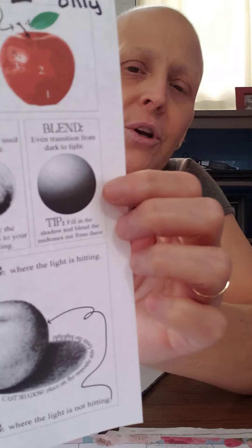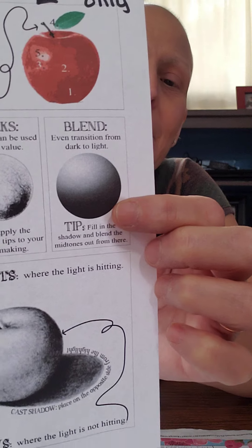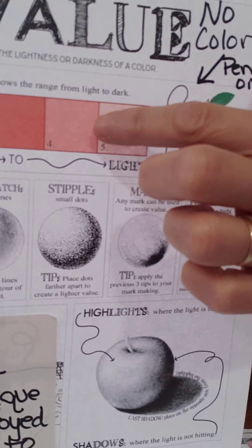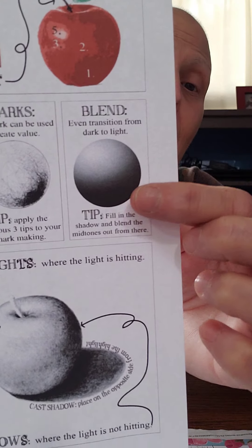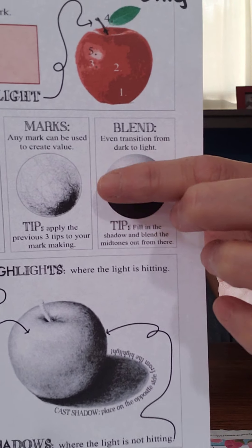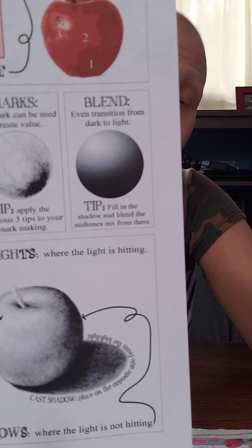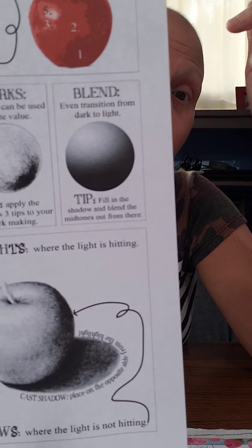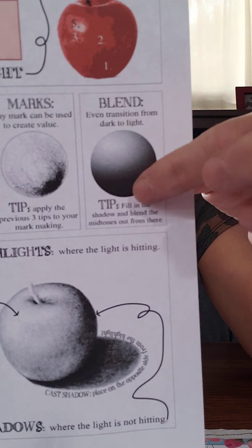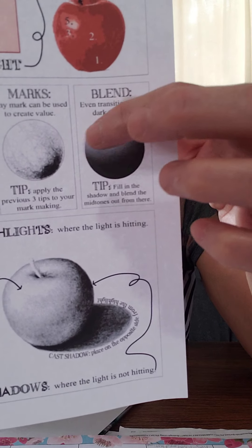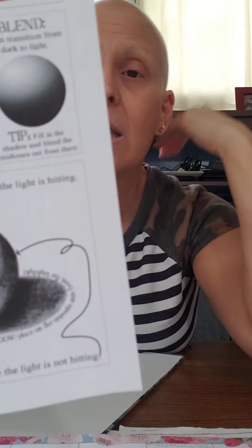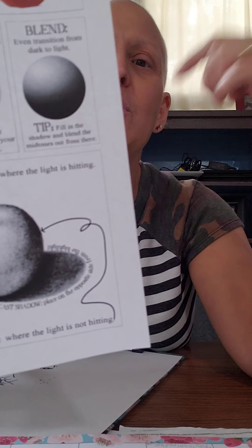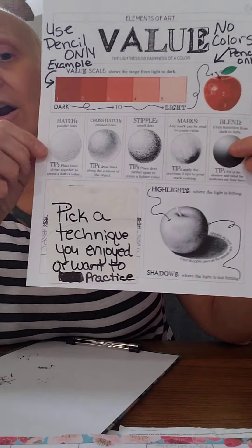The last thing we are going to learn is blending. Blending is very similar to what we've done with the value — lighter to darker. With your pencil, you'll start at the bottom right-hand corner, make that your darkest area, and blend it up. You will use your finger, or if you have available to you at home a Q-tip, that helps also. You can use your finger and blend up — this is where your eraser might come in handy as well. That is your second part of your worksheet.